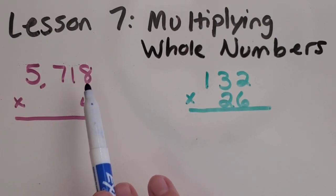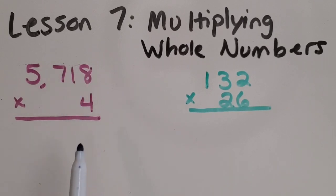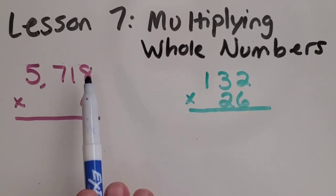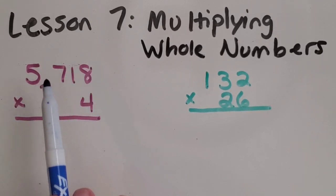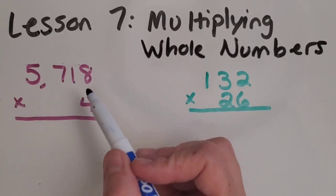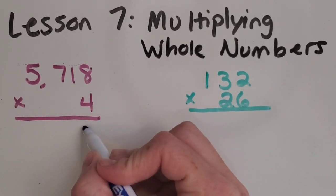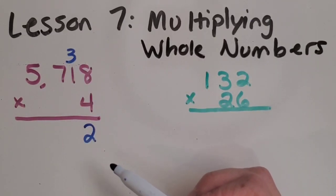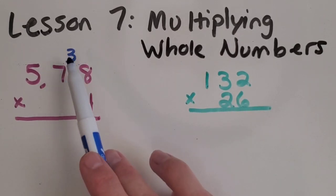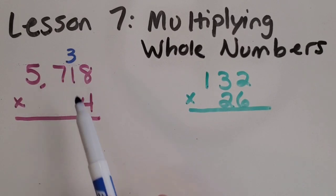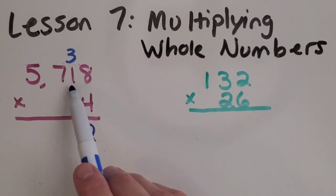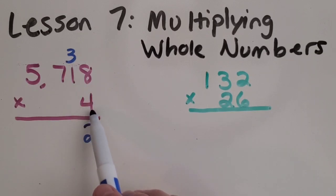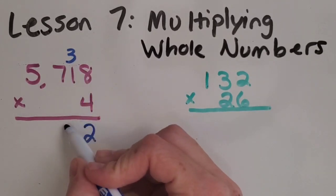We want to start with our ones place and multiply all of the digits times four. So let's start. Eight times four is 32. I'm going to regroup that three because we know that 32 is really three tens. So we're going to put it with the tens and two ones, which we put in the ones place. Then we keep going. So one times four is four, plus the three is seven.